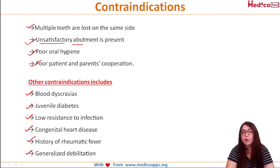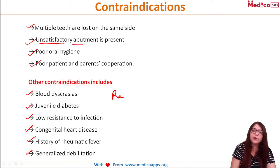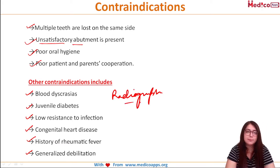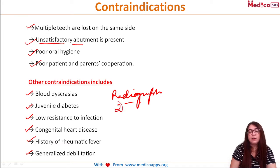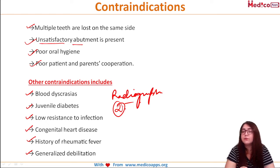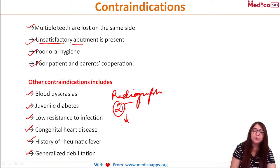Before preparing the tooth for the distal shoe space maintainer, you need to take a radiograph to see the position of the erupting tooth and the available space. You should use the distal shoe space maintainer until there is eruption of the tooth. When the crown of the erupting tooth becomes visible, you then need to replace it with a band and loop retainer.